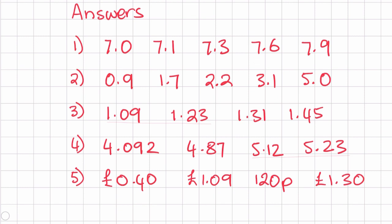Just note on the last question the units are different, so what you can do is change them all into the same unit. I'd prefer to change them into pounds — if you want, you can change them into pence as well. For example, 120 pence will change into £1.20, and then you'll have all of them in decimals. I hope this video helps and you are able to order decimal numbers with any number of digits. If this video helped you, please give it a like and don't forget to subscribe for future videos.